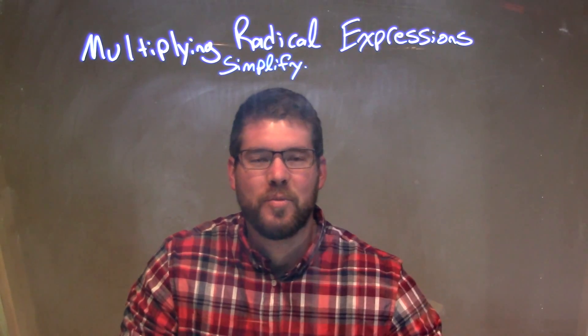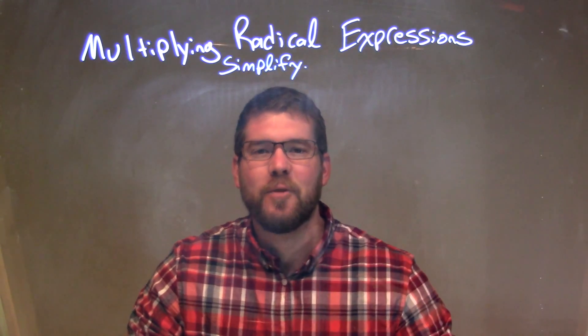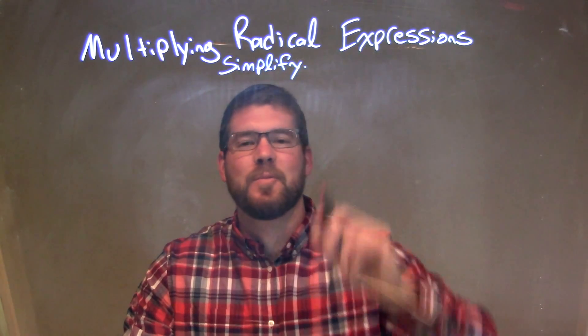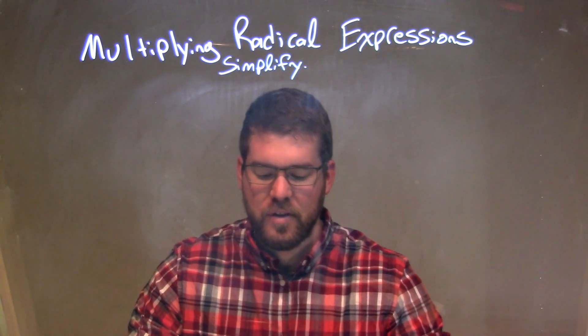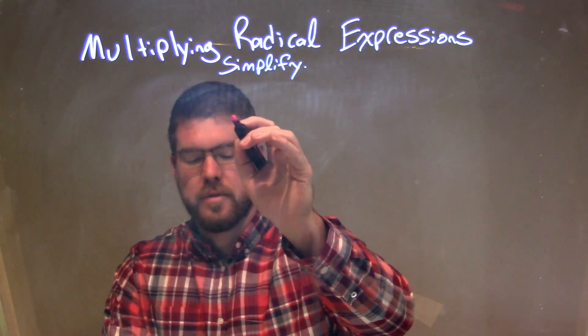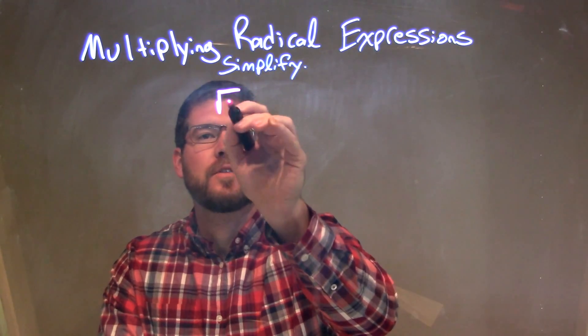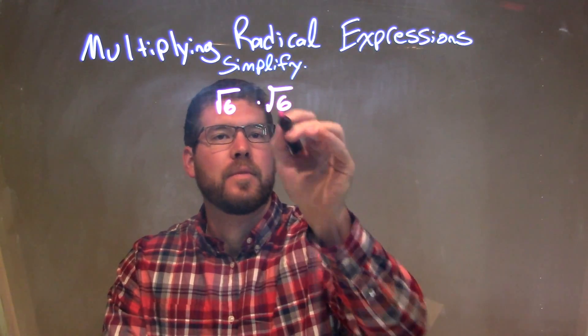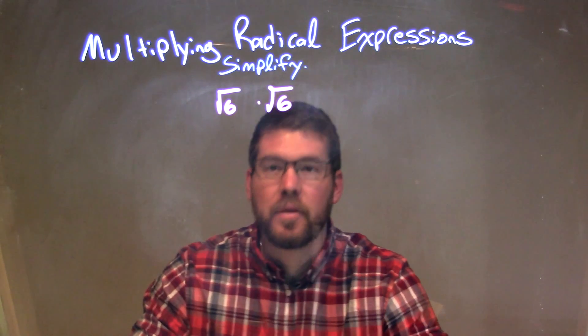Hi, I'm Sean Gannon, and this is MinuteMath, and today we're going to learn about multiplying radical expressions. So if I had to simplify this expression: square root of 6 times the square root of 6.